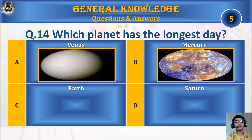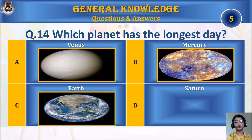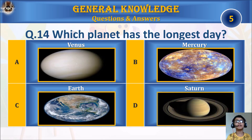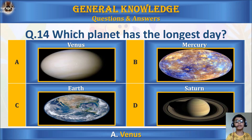Question 14: Which planet has the longest day? A. Venus, B. Mercury, C. Earth, or D. Saturn? Your time starts. The answer is A. Venus.